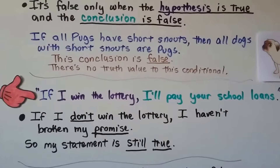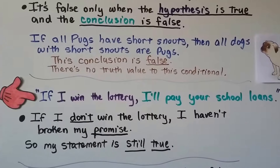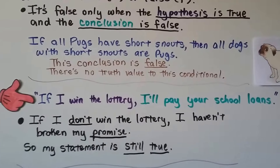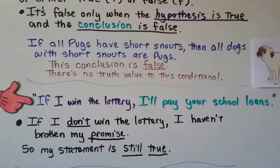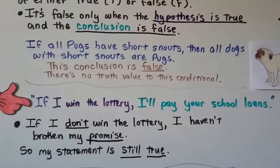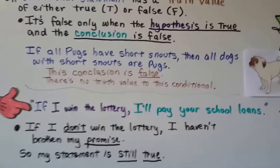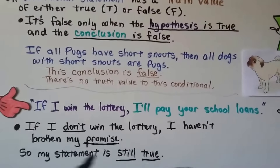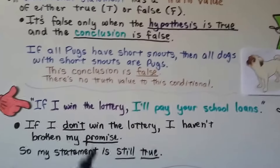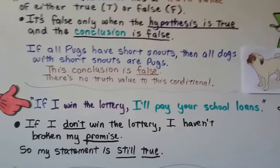Be careful, because take a look at this one: if I win the lottery, I'll pay your school loans. Now, if I don't win the lottery, I haven't broken my promise. If I never win the lottery, I don't have to pay your school loans. So it's a promise — my statement is still true.